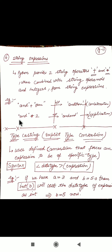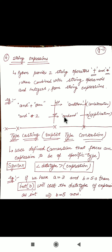The star operator is used for string repetition. We write a string, then use the star operator followed by a number indicating how many times it should be replicated. For example, 'and' star 2 will give you the string 'and' twice — 'and and' — as the output.